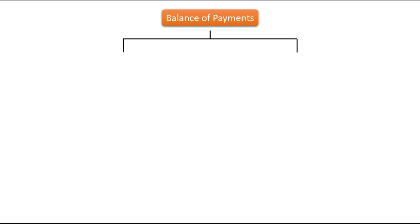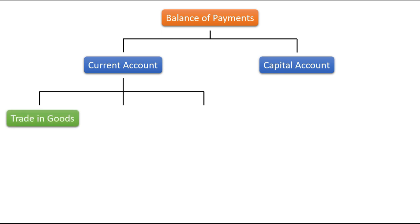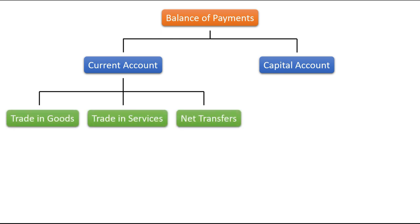The balance of payments consists of the current account and the capital account. The current account is further subdivided into trade in goods, trade in services, and net transfers. Trade in goods refers to the trade balance.